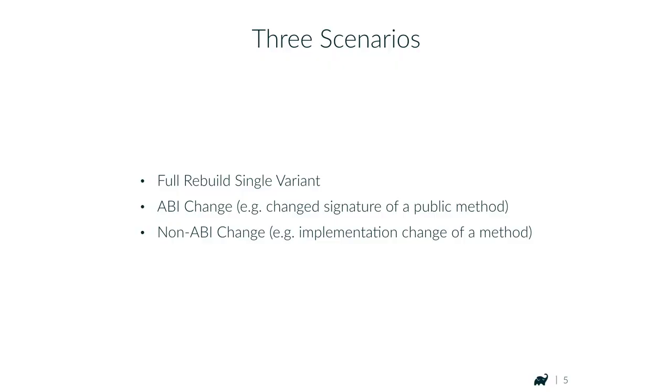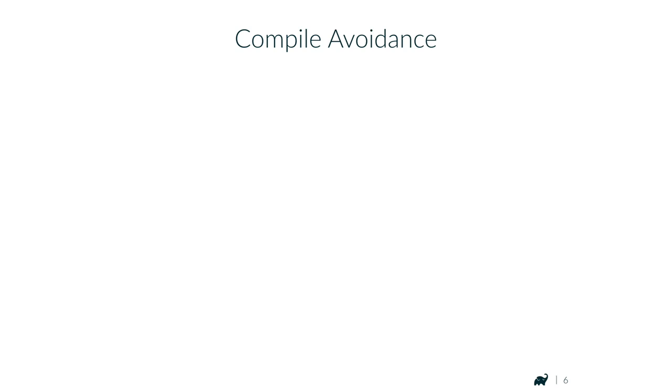The reason why we distinguish between an ABI change and a non-ABI change is that they allow for different optimizations. Before we show you the numbers, let's talk about those optimizations in more detail, because there's some confusion around certain terms and it will make it easier to reason about the numbers later.